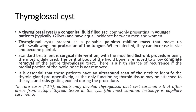Third, thyroglossal cyst. It is a congenital fluid-filled sac, commonly presenting in younger patients, and has equal incidence between men and women. Thyroglossal cysts present as a palpable painless midline mass that moves up with swallowing and protrusion of the tongue. When infected, they can increase in size and become painful. Standard treatment is surgical intervention, with the modified Sistrunk procedure being the most widely used. The central body of the hyoid bone is removed to allow complete removal of the entire thyroglossal tract. There is a high chance of recurrence if the medial portion of the hyoid bone is not removed. It is essential that these patients have an ultrasound scan of the neck to identify the thyroid gland preoperatively, as the only functioning thyroid tissue may be attached to the cyst and risks getting excised during the procedure.